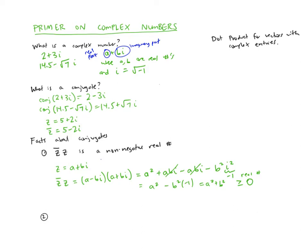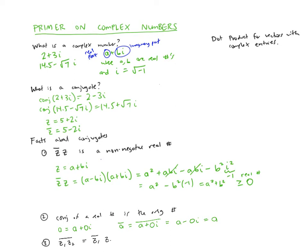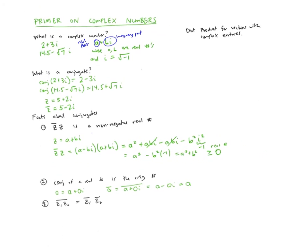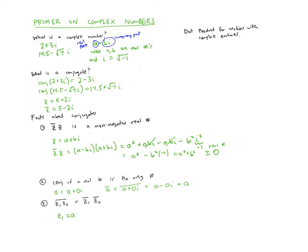A second fact is that the conjugate of a real number is the original number. If you have a real number a, written as a + 0i, its conjugate is a − 0i, which is the same as a. A third fact is that the conjugate of a product z₁ times z₂ equals z₁-conjugate times z₂-conjugate. You can prove this by writing z₁ = a₁ + b₁i and z₂ = a₂ + b₂i and working out both sides.